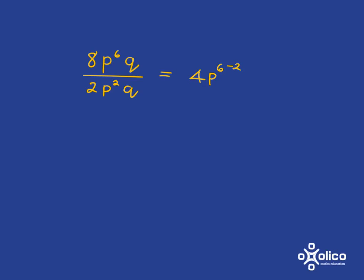and you've just got q in each case, q to the 1, q to the 1. So you'll have q to the 1 minus 1. You might well have noticed that it's just q divided by q, which is 1. That's fine too.